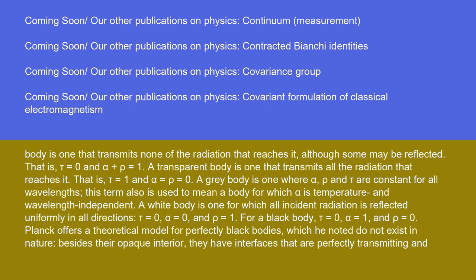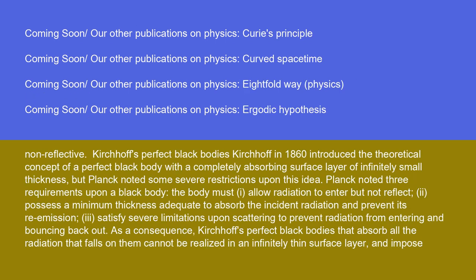For a black body, tau equals zero, alpha equals one, and rho equals zero. Planck offers a theoretical model for perfectly black bodies, which he noted do not exist in nature. Besides their opaque interior, they have interfaces that are perfectly transmitting and non-reflective. Kirchhoff in 1860 introduced the theoretical concept of a perfect black body with a completely absorbing surface layer of infinitely small thickness.